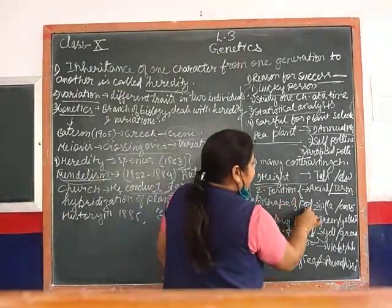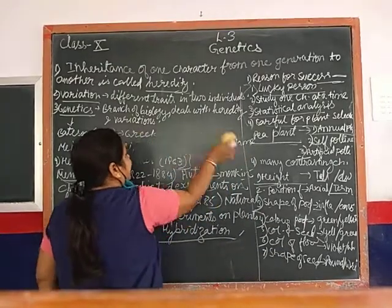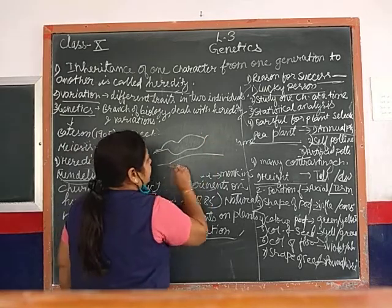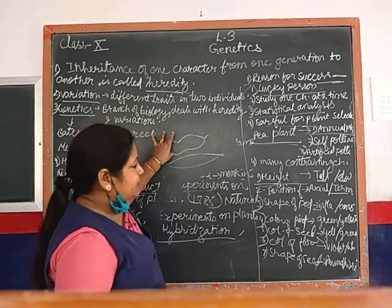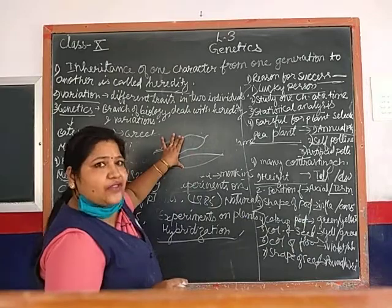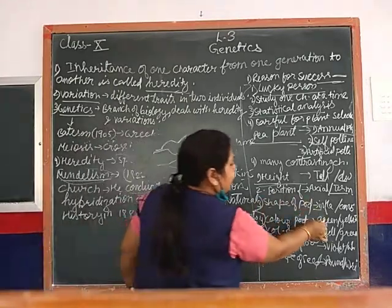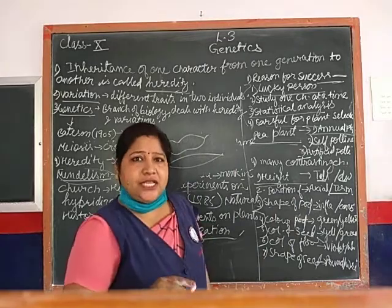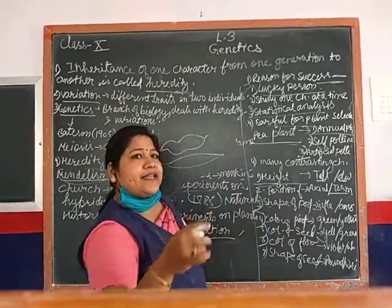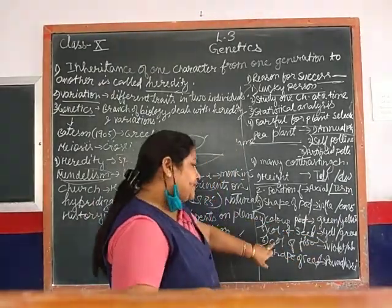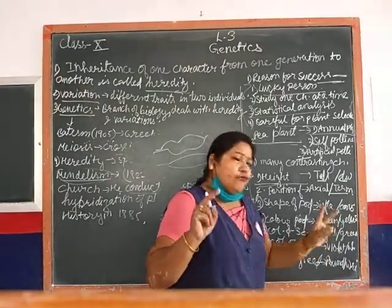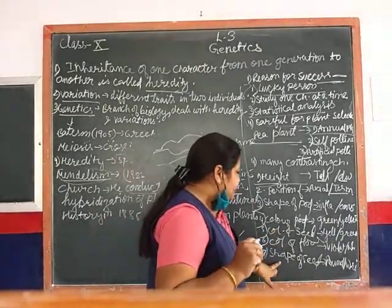Then, color of the pod - green and yellow. When it is young and green it is one color; when yellow it is another. Also, the color of the seeds - and the seed color. The seed coat color is one character, and the shape of the seed is another - round or wrinkled.